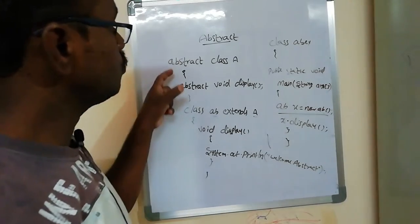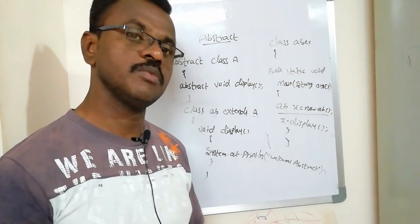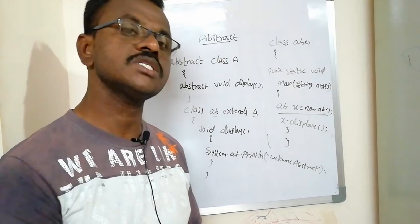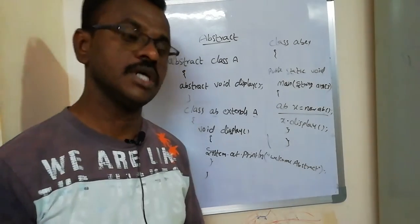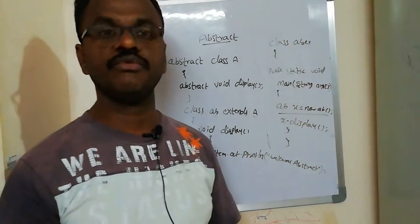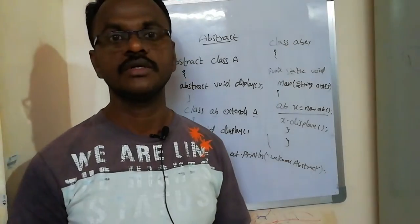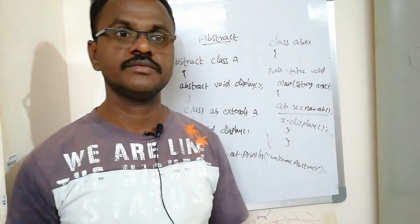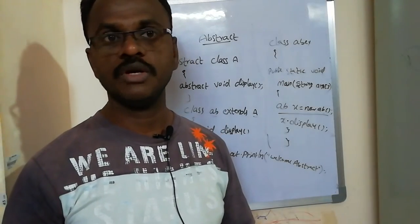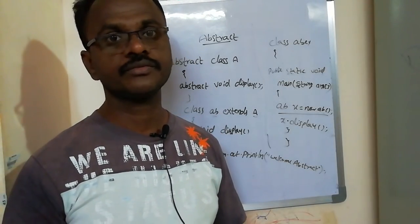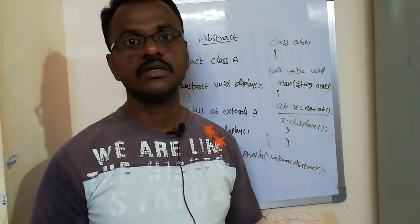This is a simple example for what is meant by abstract, what is meant by abstract class and abstract methods. This is the abstract feature of the OOP concept with Java coding. Thank you for watching my channel. Please give any comments on my video and please subscribe to my channel. Thank you.